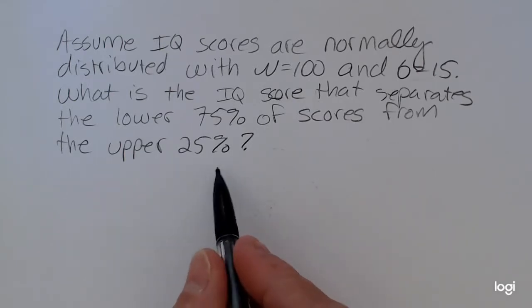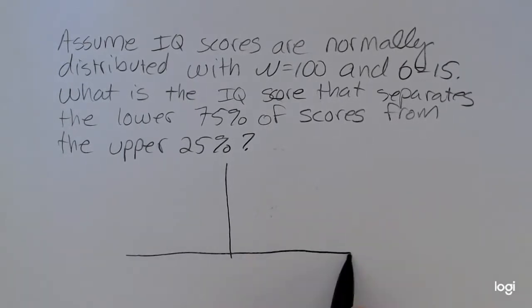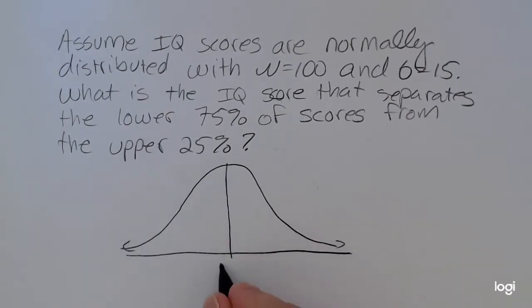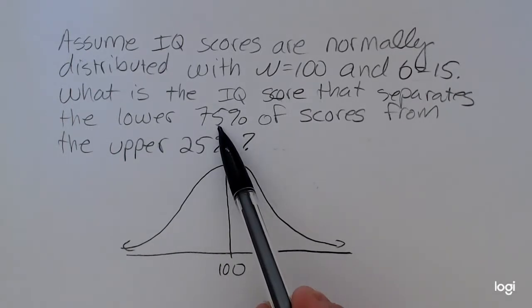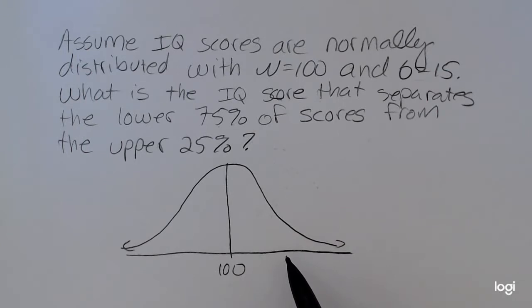So I want to sketch what is given. IQ scores are assumed to be normally distributed with a mean of 100. Now I want the score that separates the lower 75% from the top 25%. So if I want 75% of scores to be lower than this mystery value, that value is going to be above the mean. Because if we were exactly at 100, we would be at the value that separates the lower 50% from the upper 50%.